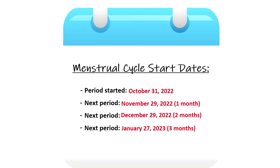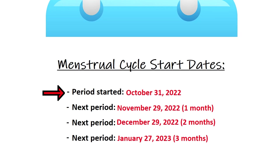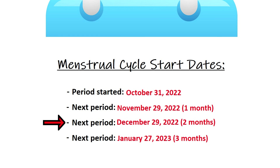Let's take a look at some menstrual cycle start dates. The first date we have of when the period started was October 31st, then the next period started on November 29th, then December 29th, and finally January 27th — which gives us a total of three months.